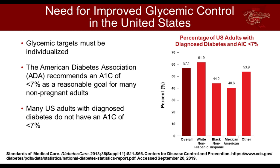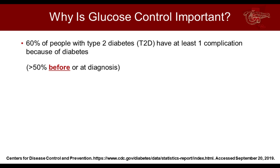We have to start looking beyond glycemic control — and this is where diabetes care is now going. There is no such thing as a person with just diabetes. Diabetes goes hand-in-hand with cardiovascular disease, macrovascular complications, and a whole plethora of other conditions depending on whether it's type 1 or type 2. For type 1, you have autoimmune conditions to consider. For type 2, the cardiovascular component is huge. The problem with type 2 is it takes about 9 to 12 years to actually diagnose.